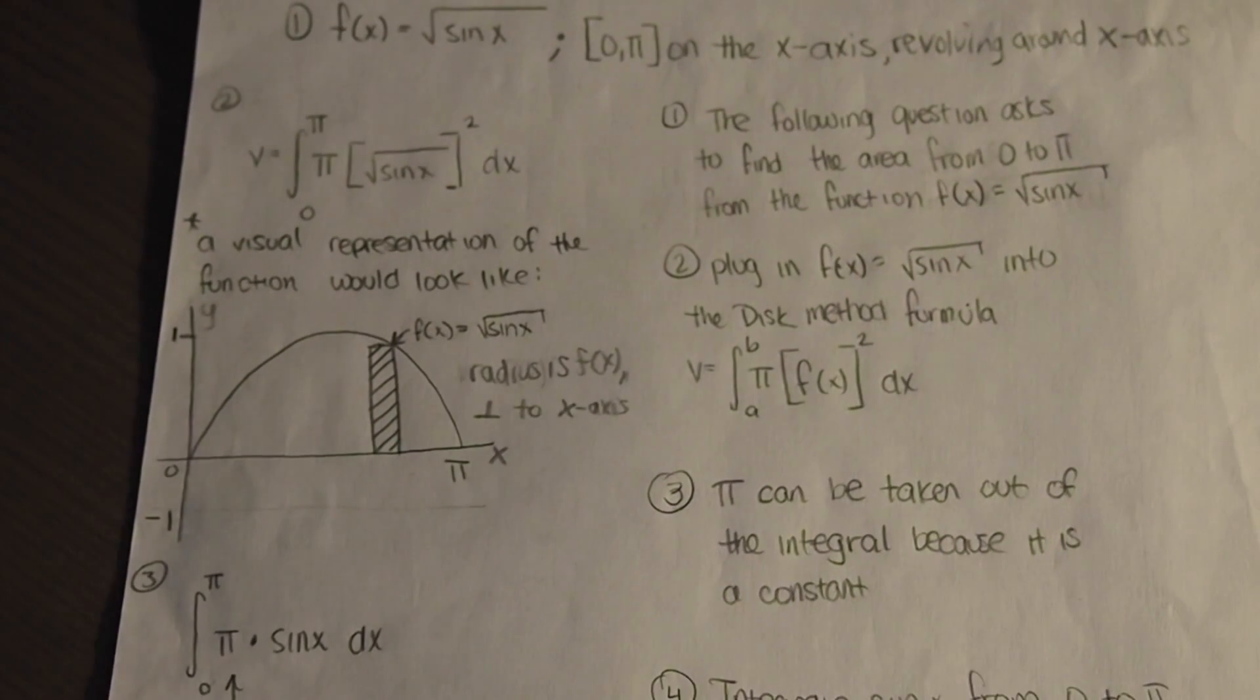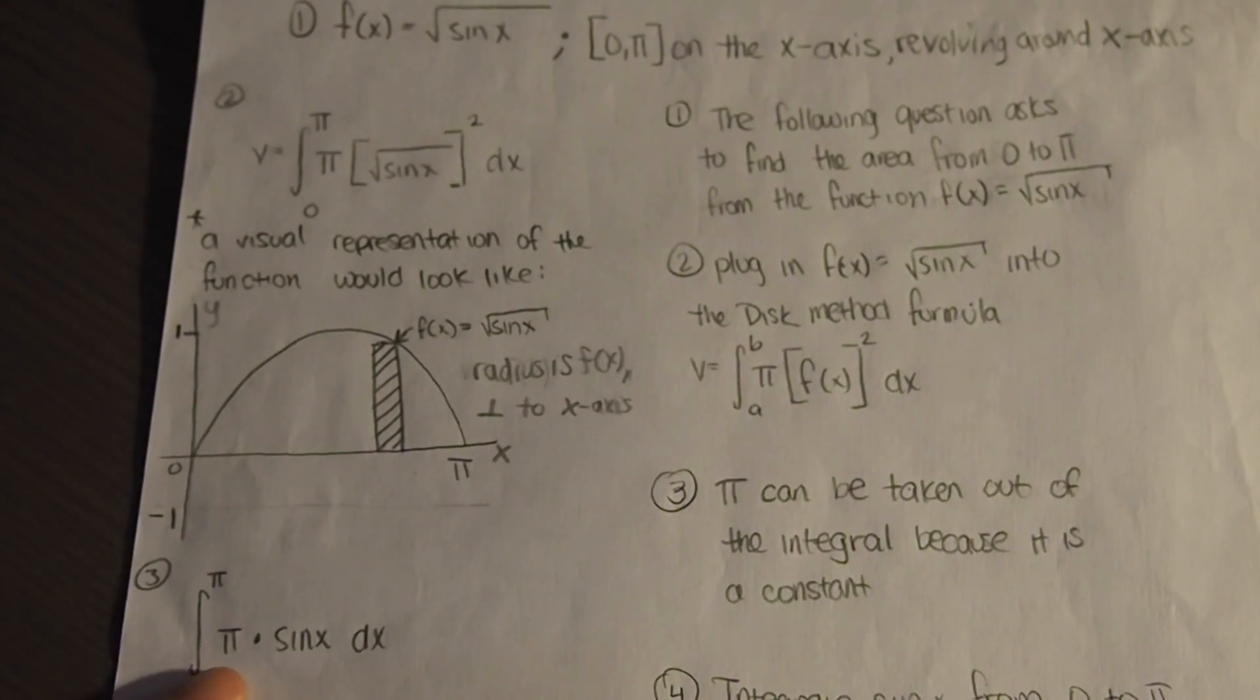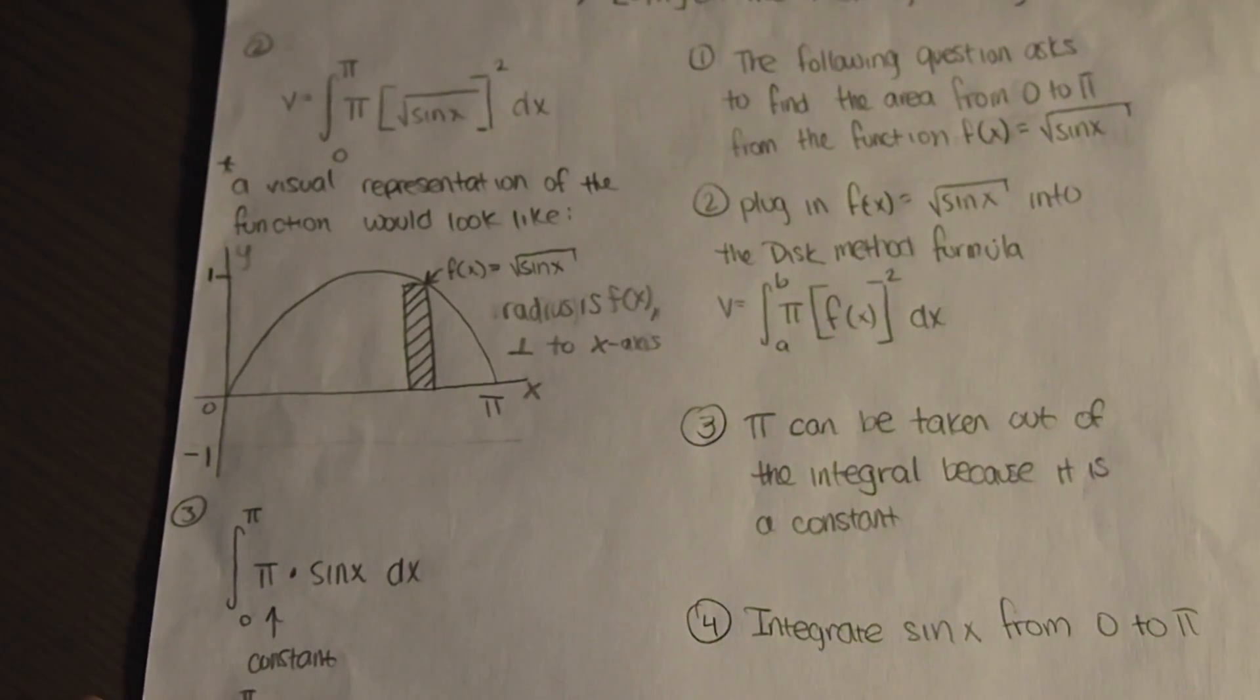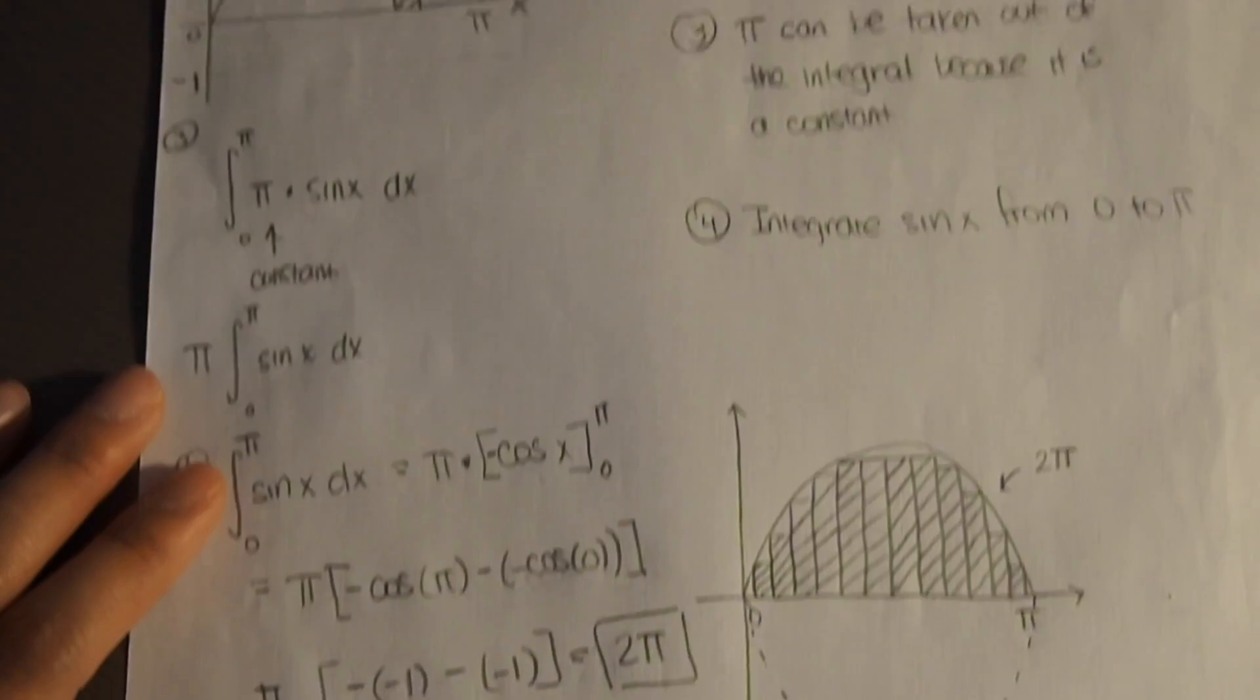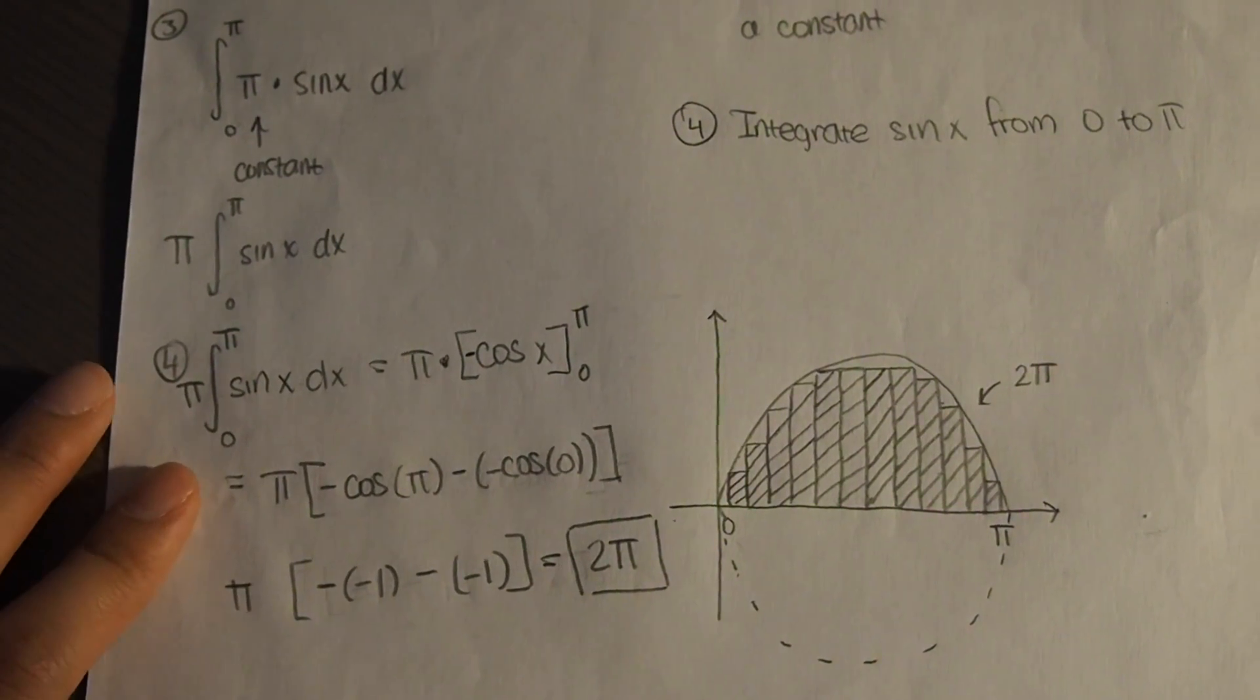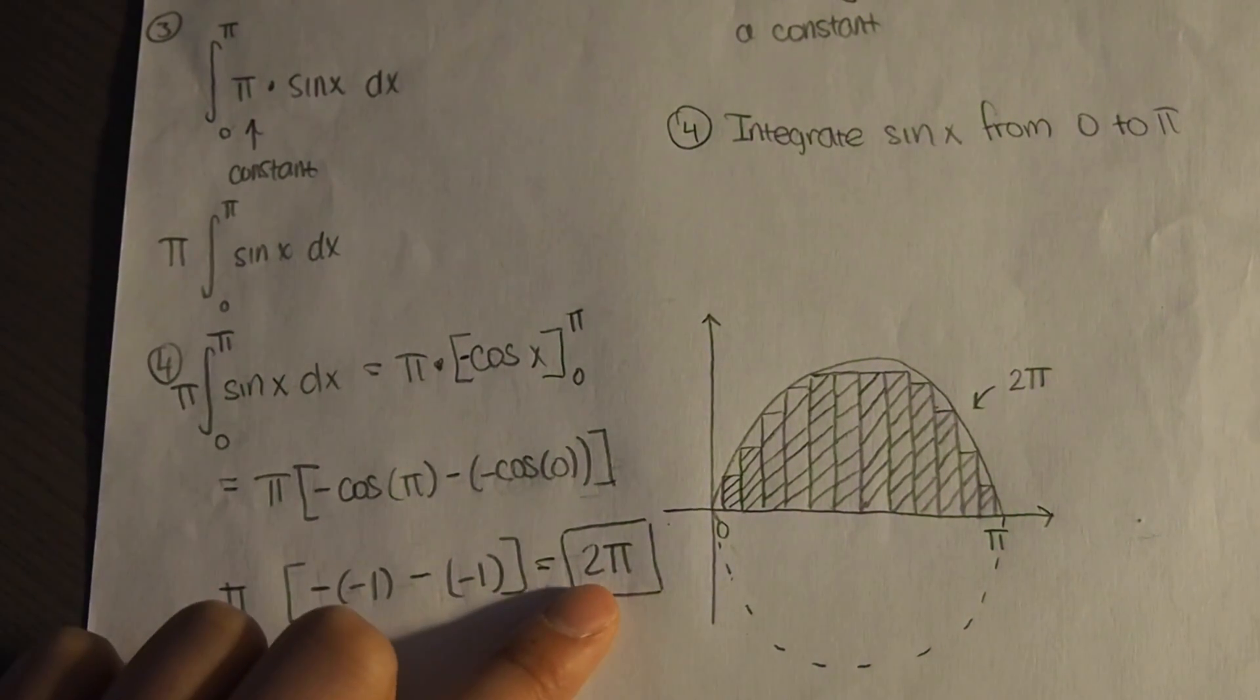The π can be taken out because it doesn't have to be integrated because it's a constant. And after integrating, we find that using the disk method, our volume will be 2π.